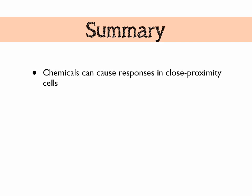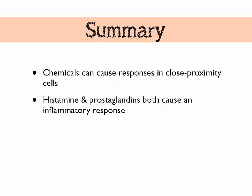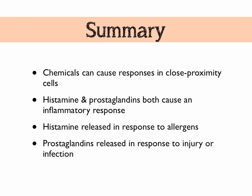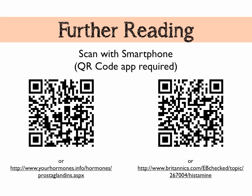To summarize: chemicals can cause responses in close-proximity cells — this is paracrine signalling. Both histamine and prostaglandins cause an inflammatory response. Histamine is released usually in response to allergens, but sometimes injury, while prostaglandins are released in response to injury or infection. For further reading, there's a great website called yourhormones.info with information on prostaglandins, and a Britannica article on histamine. Thanks for watching — like, comment and subscribe.